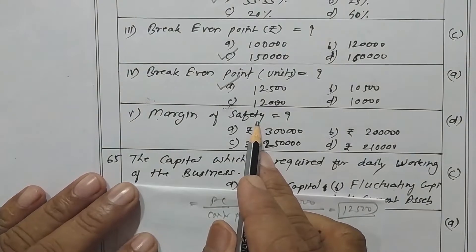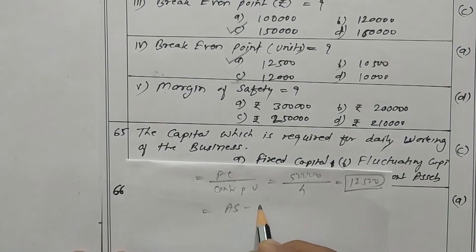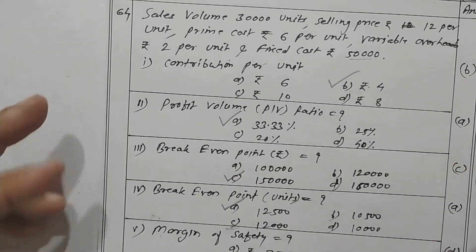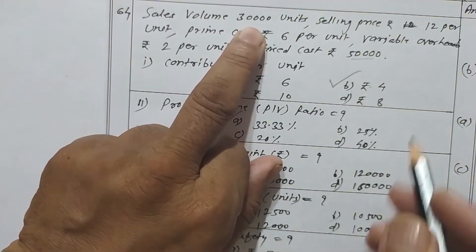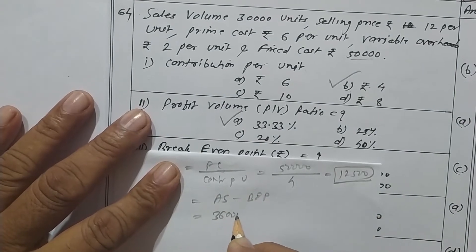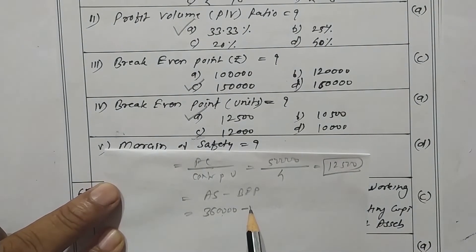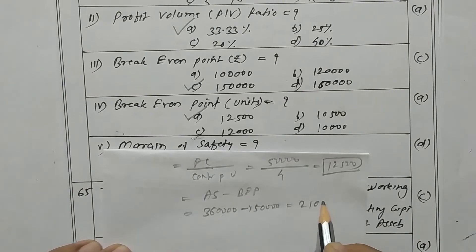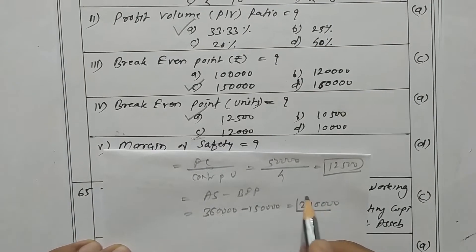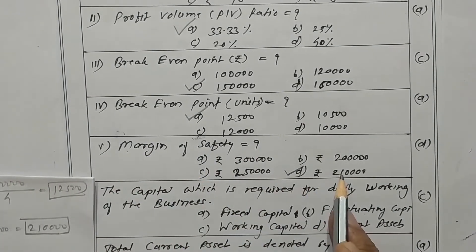Now what is the margin of safety? The formula is actual sales minus sales at BEP. Actual sales is 30,000 units into rupees 12, which is 3,60,000. BEP sales is rupees 1,50,000. So 3,60,000 minus 1,50,000 gives rupees 2,10,000 as the margin of safety. Option D is the correct one.